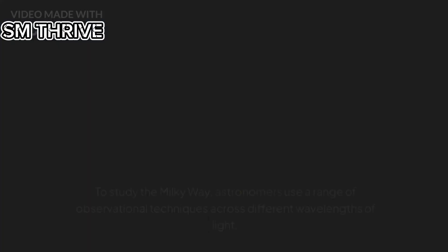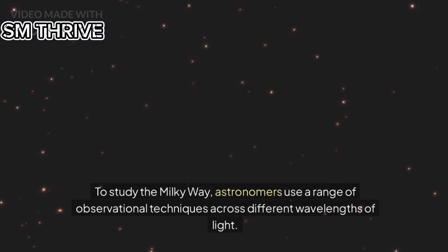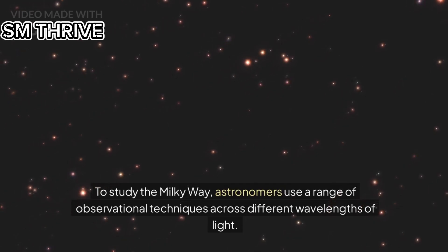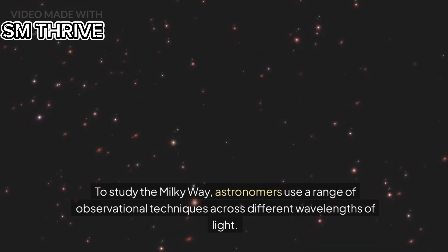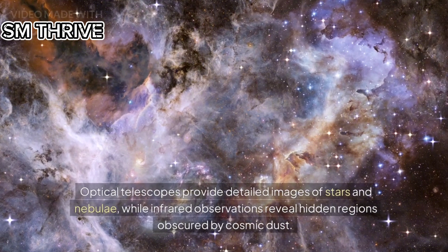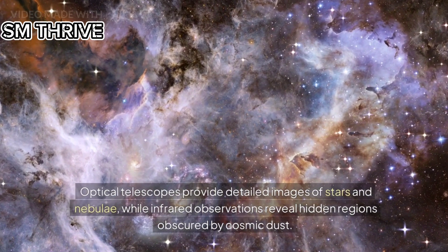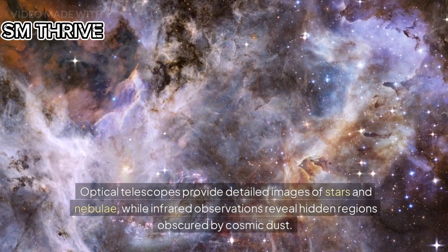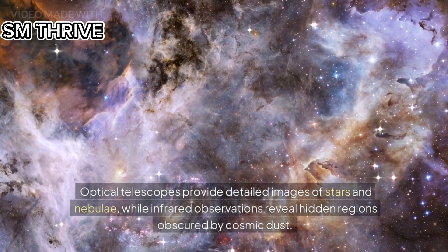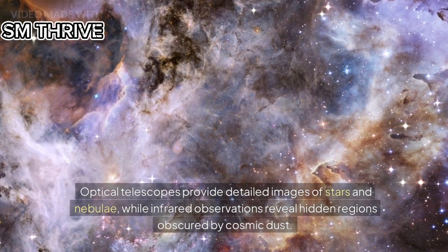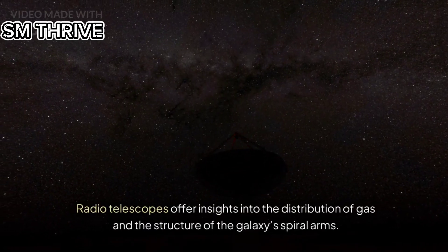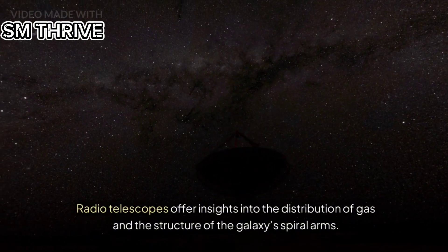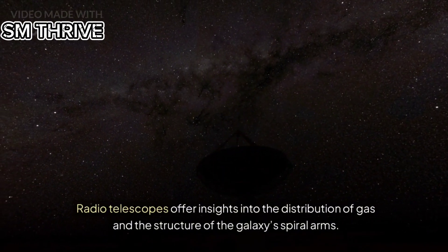To study the Milky Way, astronomers use a range of observational techniques across different wavelengths of light. Optical telescopes provide detailed images of stars and nebulae, while infrared observations reveal hidden regions obscured by cosmic dust. Radio telescopes offer insights into the distribution of gas and the structure of the galaxy's spiral arms.